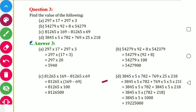For part D: 3845 into 5782 minus 769 into 25 plus 218. The common factor here is 769 times 5 equals 3845. So 3845 into 5782 and 3845 into 218 — we take 3845 common and compute 782 minus 218 inside the bracket to get the final answer.